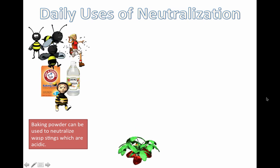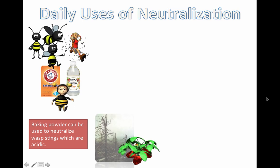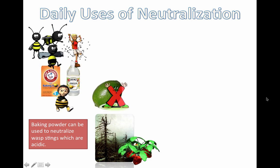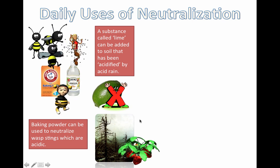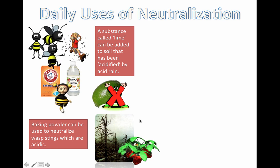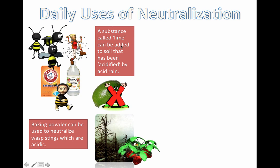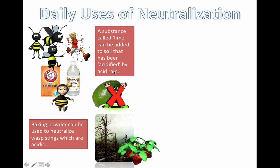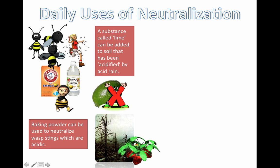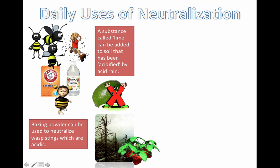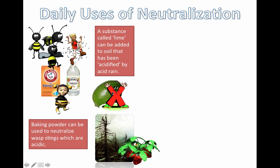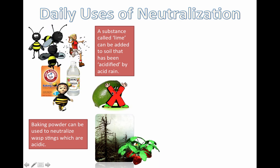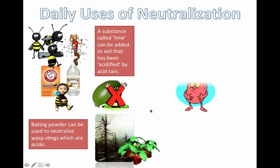Don't go doing that without checking with your parents first. Another common use: farmers can actually treat their soil. A substance called lime can be added to soil that has been acidified by acid rain. If you've seen pictures of forests or plants getting destroyed by acidic rain from picking up acidic gases from nearby factories, this is the fix. Now, lime here is not the fruit — and it's not acidic even though limes are. This substance is actually alkaline, and farmers add it to their soil to make it more neutral. Some plants won't grow if soil is too acidic, which is a big problem if you're trying to grow food.